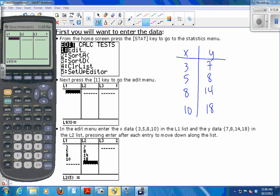So once my lists are cleared, in list one, I'm going to put all the X data. Three, five, eight, and ten. Again, after each number, you just press enter. Then I'm going to move the cursor over into list two, and I'm going to put all the Y data. Seven, eight, fourteen, and eighteen. So I've created my table of values.